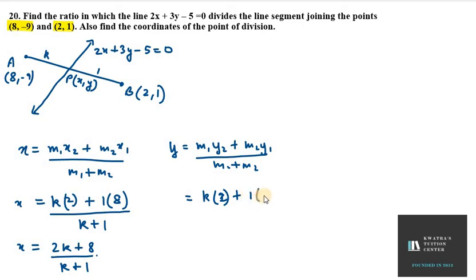m2 is 1, y1 is -9 over m1 plus m2 which is k plus 1. So you get k minus 9 over k plus 1. This is your y.